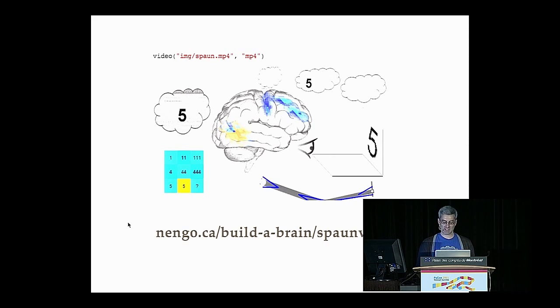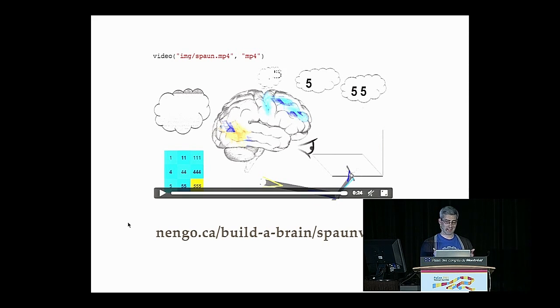So this is it performing one of those tasks. And you'll see it write its answer at the end here. 555. That's the right answer, in case you were curious. I don't have time to go into the detail about Spaun, but if you're interested, I encourage you to check out nengo.ca for some videos of Spaun happening. You can read our paper.